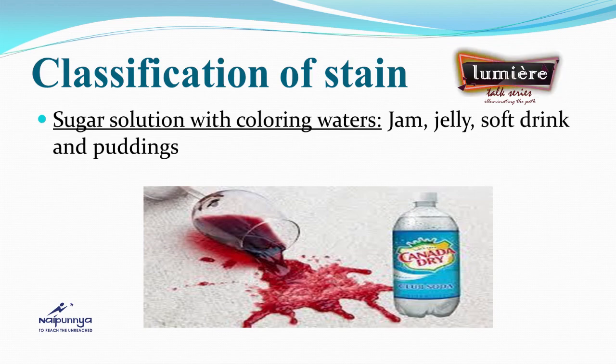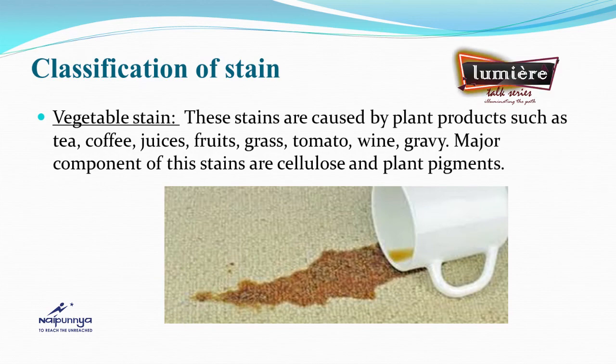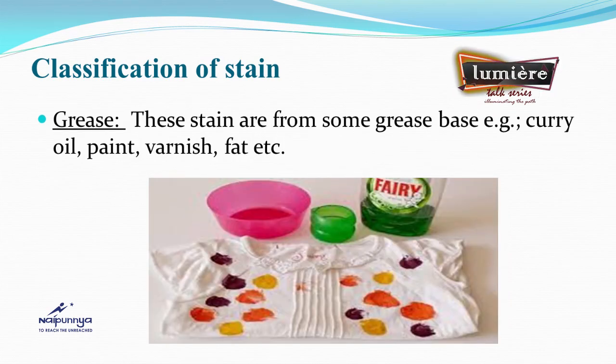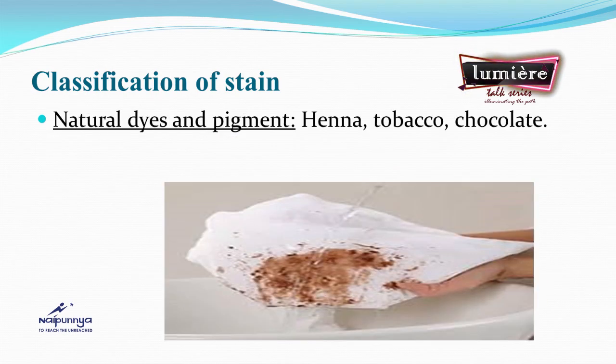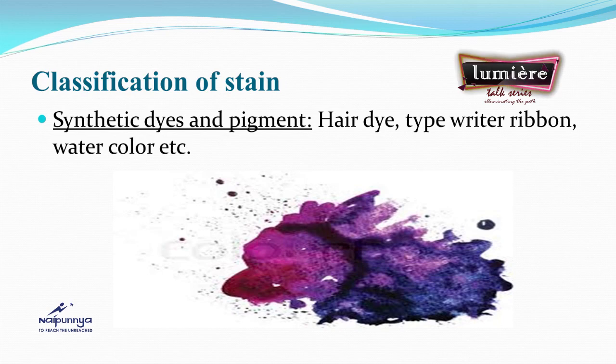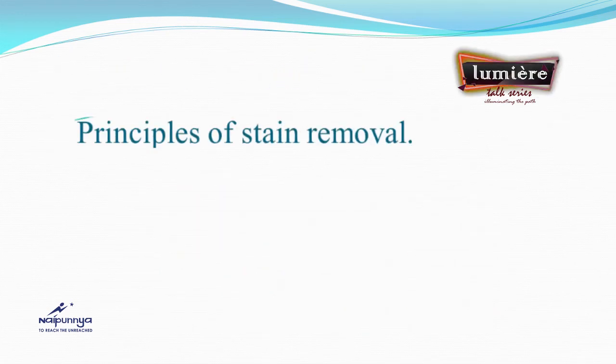Sugar solutions with coloring matter include stains caused by jam, jelly, soft drinks, syrups, and pudding. Moving on to the principles of stain removal, we follow several important steps for effective stain removal and to protect the fabric.